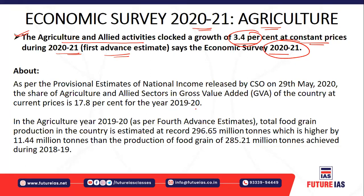When you compare with the provisional estimate released by the CSO on 29th May 2020, based on the national income, the share of agriculture and allied sector in gross value addition of the country stood at 17.8% for the year 2019-20.